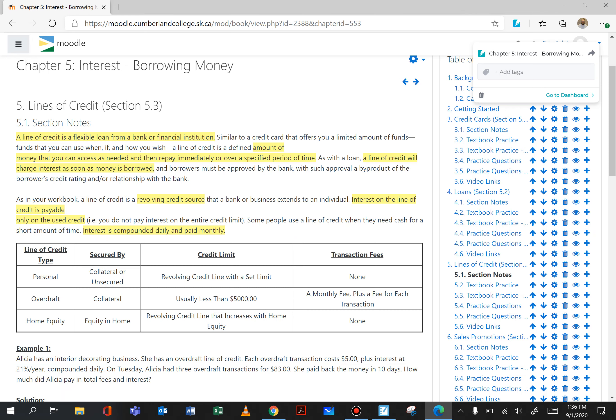In the table here we see some information that are related to the different types of lines of credit. There's a personal line of credit, this can be secured by collateral. Collateral is something that's put up so that if you don't pay back they can take and hopefully sell and get their money back, or can be unsecured. In both cases there are no transaction fees but there would be interest on the amount that you use. Revolving credit line set limit so you might have a ten thousand dollar line of credit that can go up and down.